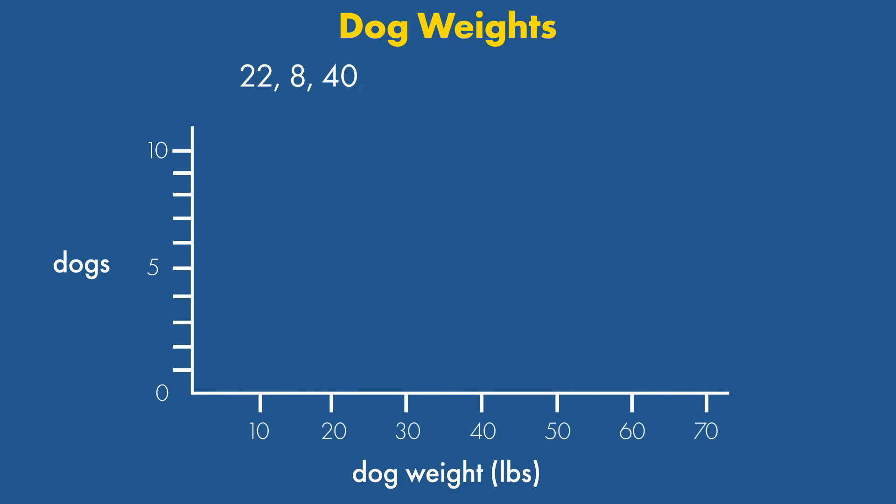Next, let's sort our dog weights from smallest to largest. Then, in each bin, we'll put how many dogs are within that range.